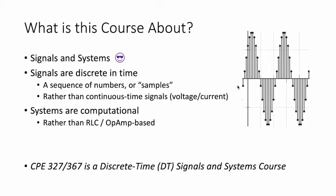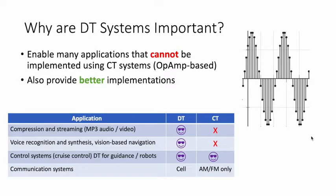So what's this course about? Signals and systems. In this case though, the signals are discrete in time, a sequence of numbers. We refer to them as samples. This is different than other signals and systems courses that involve continuous time signals such as voltages and currents.